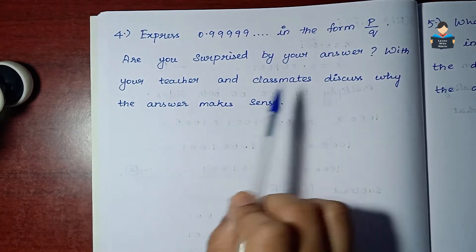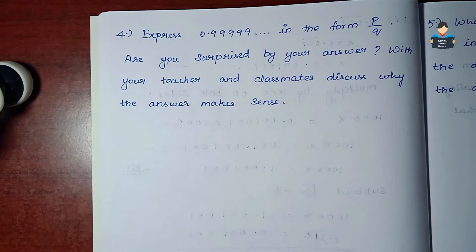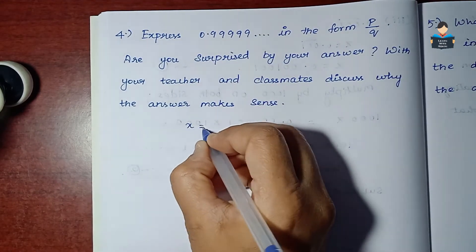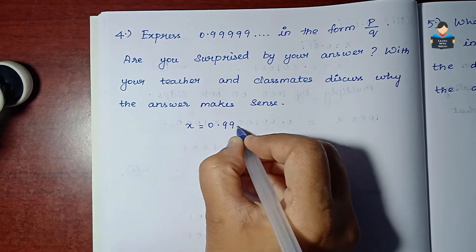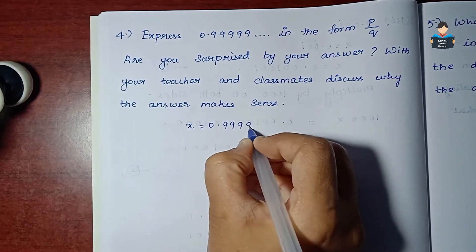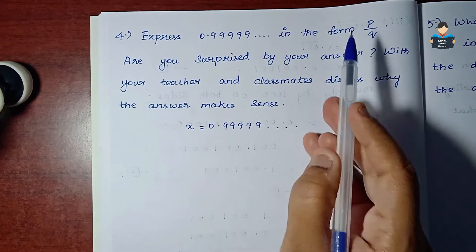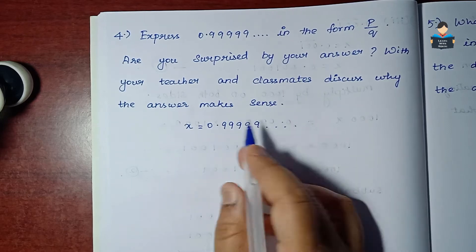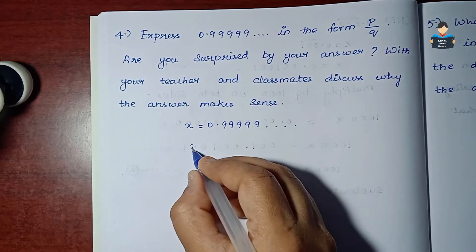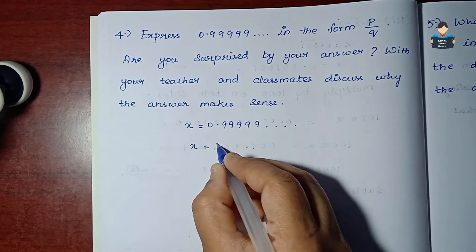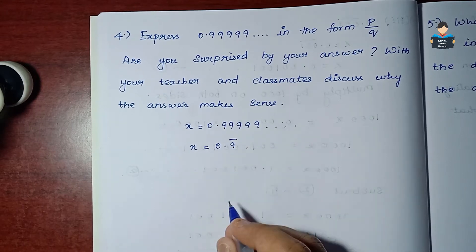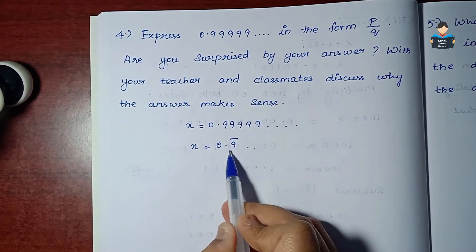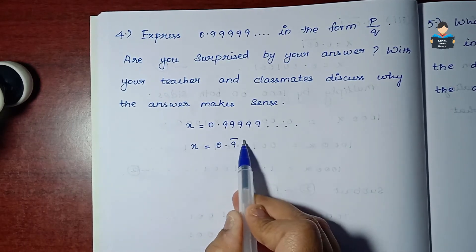So this is what we call x is equal to 0.999999... This is a non-terminating and repeating value, so we write x equals 0.9 bar, with the digit 9 above the bar.